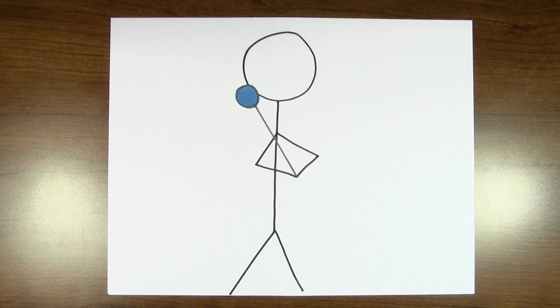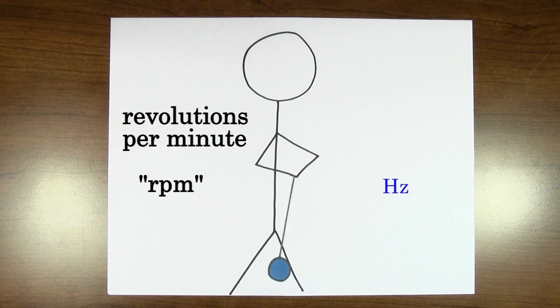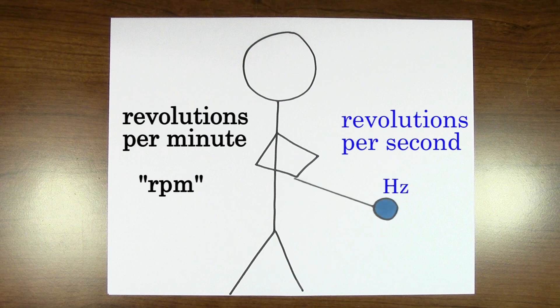One more thing. Sometimes you'll hear about frequencies given not in hertz, but in RPMs. RPM stands for revolutions per minute. Hertz is revolutions per second and RPM is revolutions per minute.